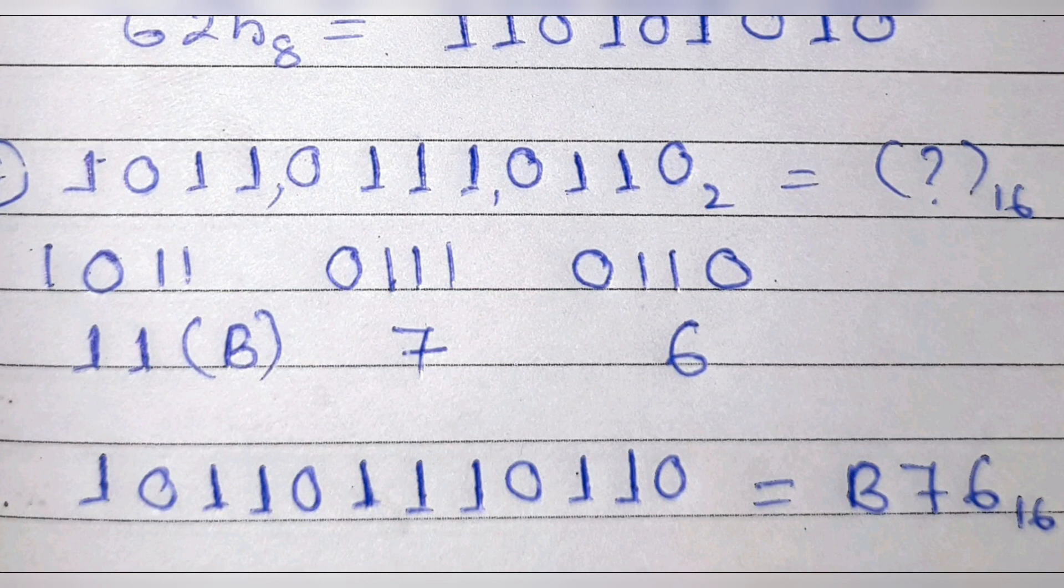First group decimal equivalent is 4, second group is 7, and the third one is 11. In hexadecimal, 10 is A, 11 is B, so we'll write as B. So the final answer is B76.